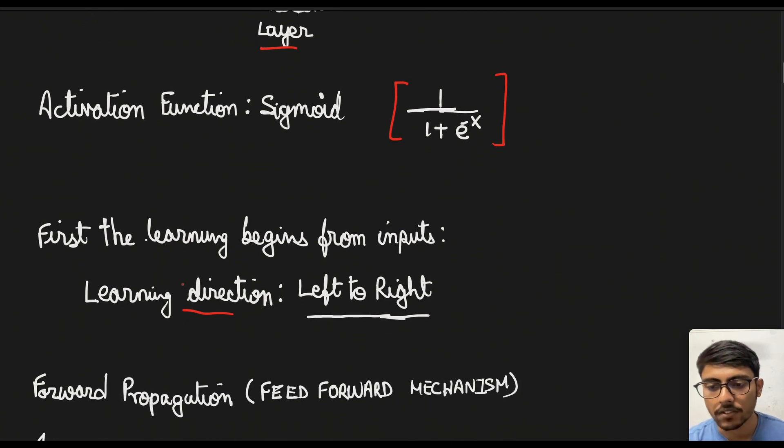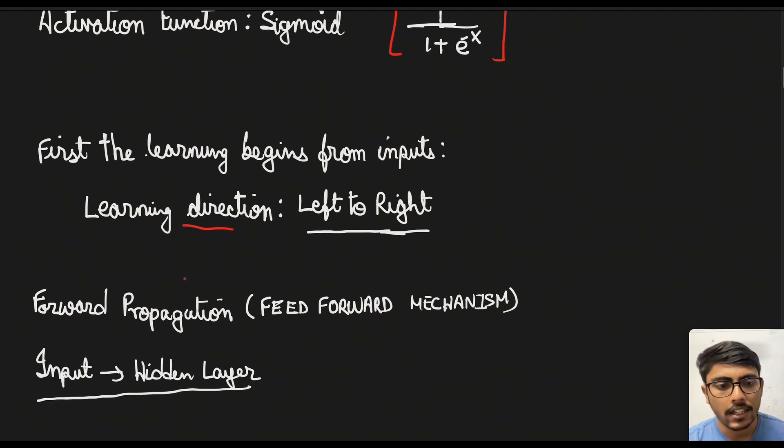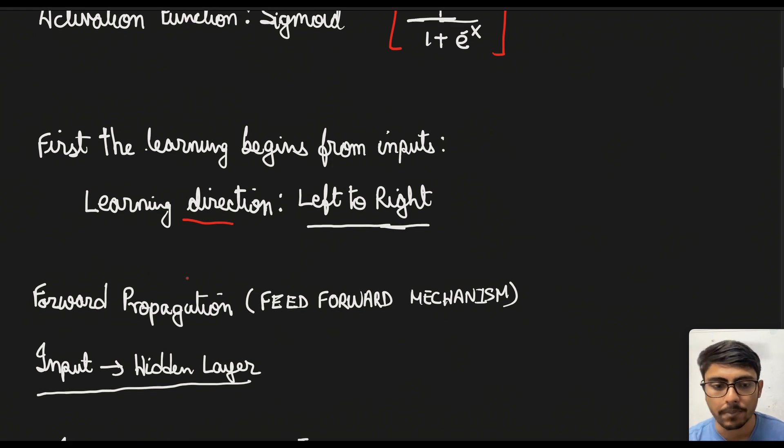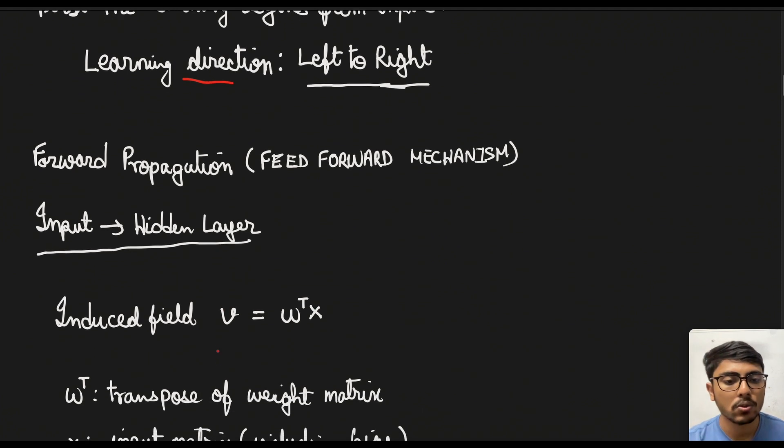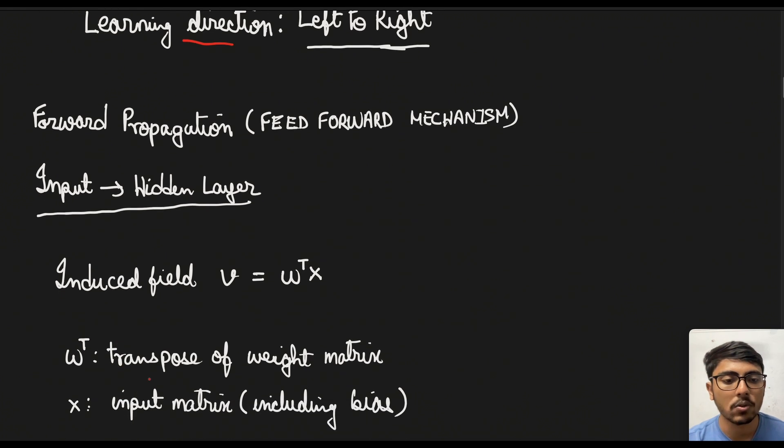Then comes the forward propagation which is also called the feed forward mechanism. In this case first we will see how the input and the hidden layer are basically associated and forward propagation occurs here. So we have something called induced field which is V and the formula for V is W transpose x multiplied with x. So W transpose denotes the transpose of the weight matrix and x denotes the input matrix including bias.